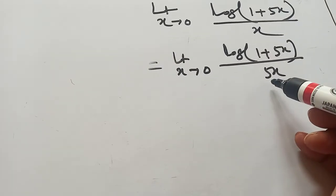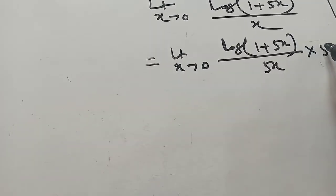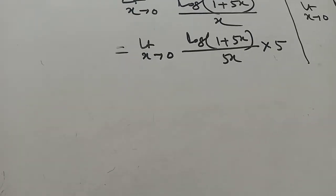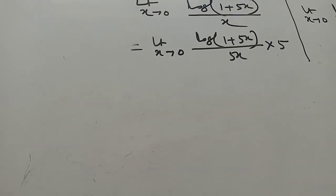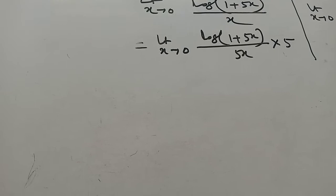You write 5x times 1 over 5x, then cancel it, then you write times 5. Then this formula is applicable.